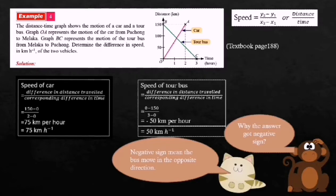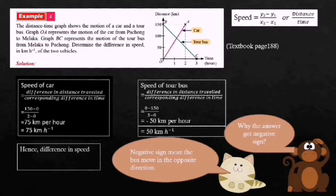Now we find the difference in speed of the two vehicles. The difference in speed equals 75 kilometers per hour minus 50 kilometers per hour, which equals 25 kilometers per hour.